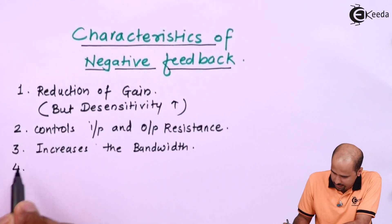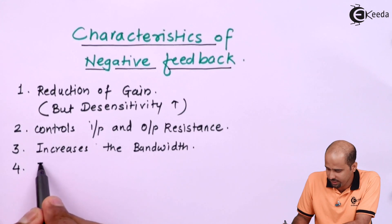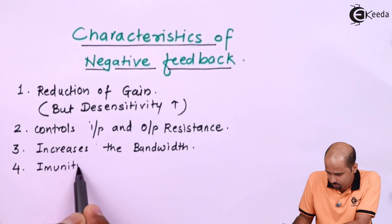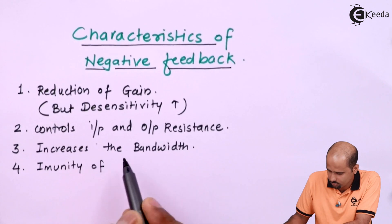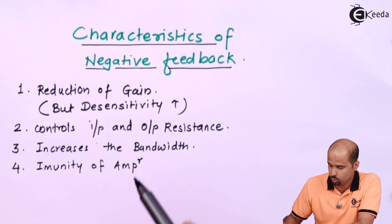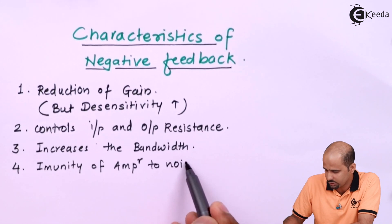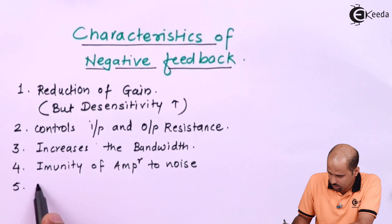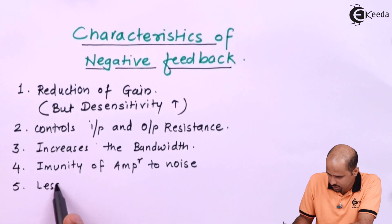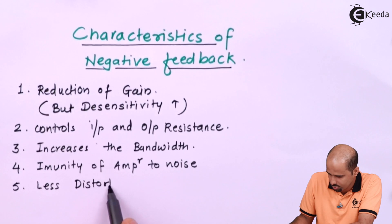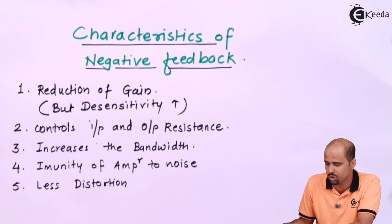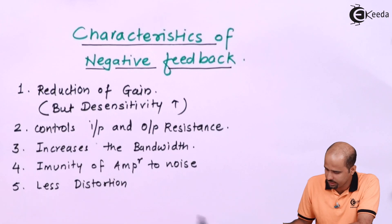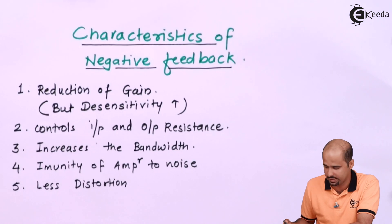The fourth characteristic is immunity to noise. The negative feedback amplifier is immune to noise. If noise is reduced, then distortion will also be reduced. So we can say there is less distortion — distortion is reduced by using negative feedback. So we have: increased bandwidth, noise immunity, less distortion, and reduction of gain.